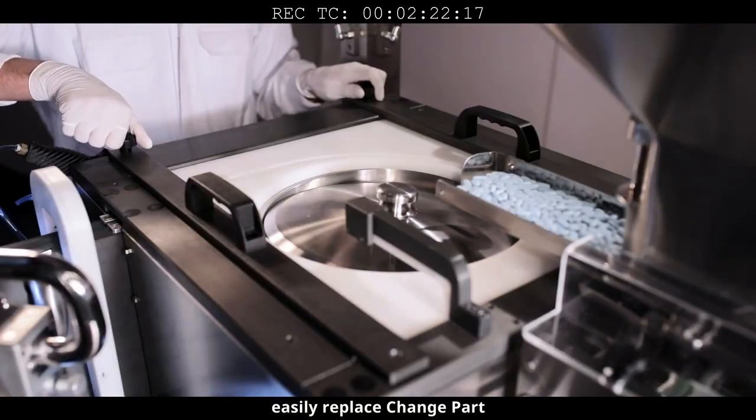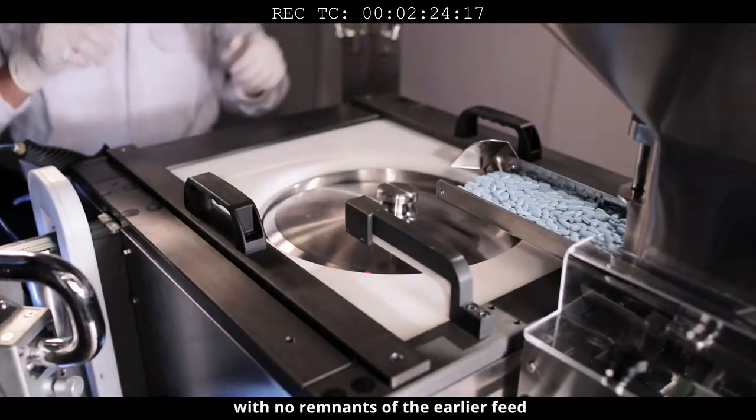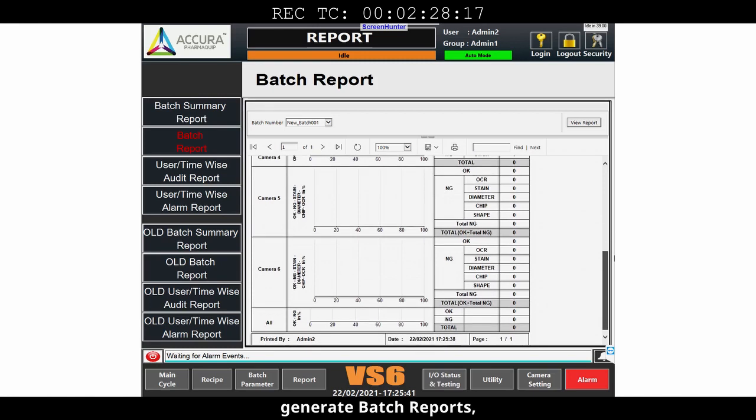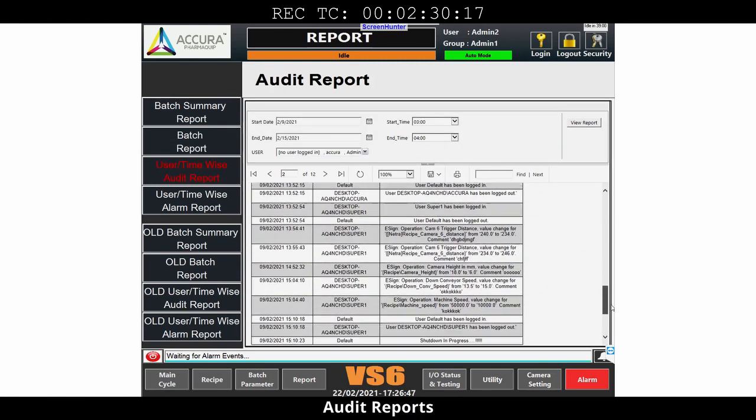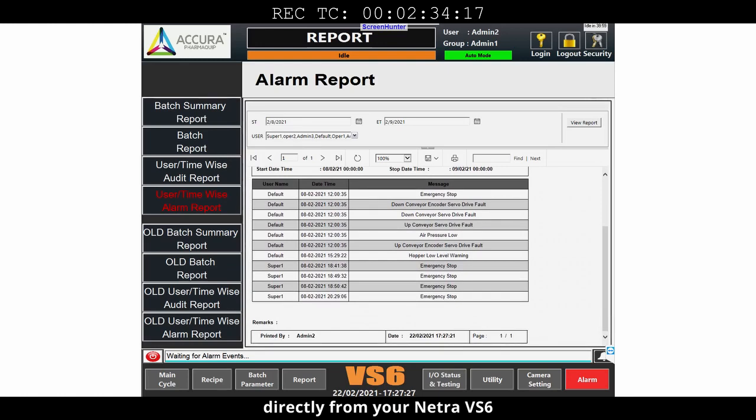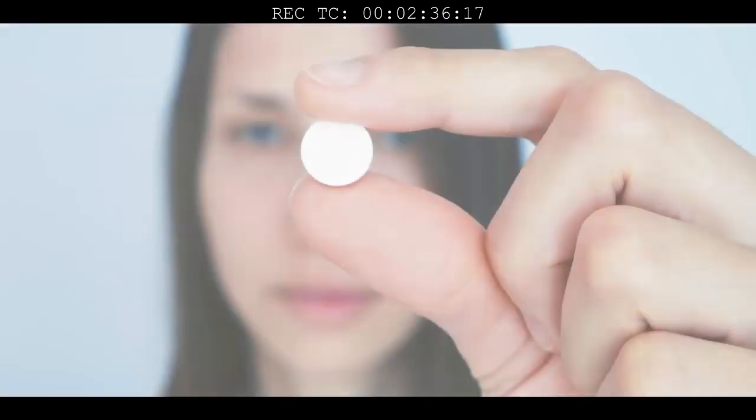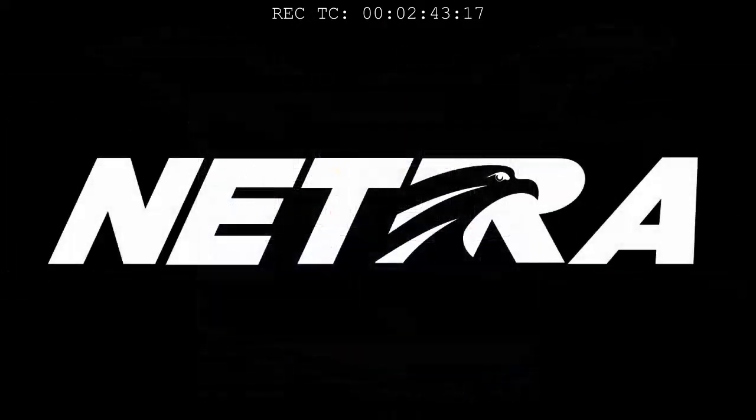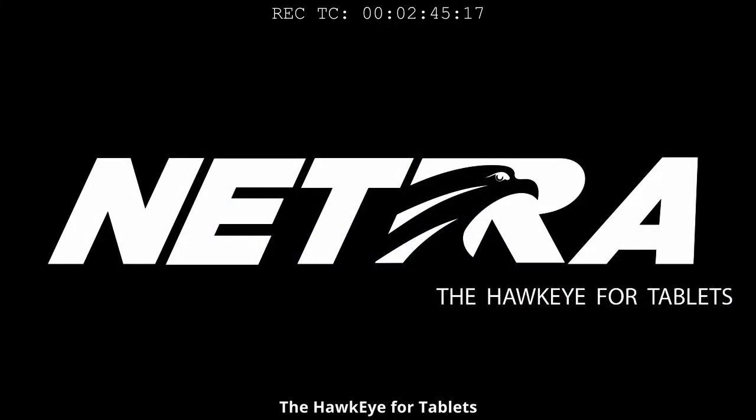Before you run a new batch, easily replace change parts with no remnants of the earlier feed. After the test is run, generate batch reports, audit reports, and defect reports directly from your Netra VS6. Yes, that pill is okay. Netra VS6, the Hawkeye for tablets.